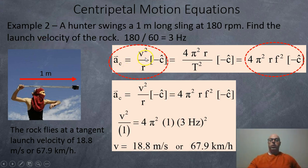So we're going to use two formulas for centripetal acceleration: v² over r and 4π²rf². So we're going to put those two formulas together. And so we're going to get v² over the 1 meter equals 4π² times the 1 meter times the 3 hertz squared. So we're going to cross multiply the 1 up, which doesn't really do anything. Then we're going to square root both sides. And when we're done, we're going to get 18.8 meters per second or 67.9 kilometers per hour. So this rock will fly out at almost 68 kilometers per hour.